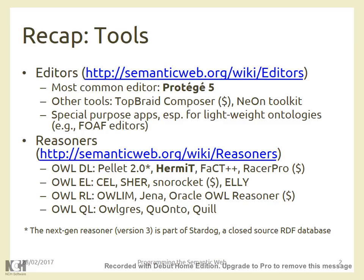Just to recap from the last lectures: in the semantic web we have some editors for many ontologies. The most common is Protégé, realized by Stanford University and written in Java, using a library called OWL API. There are other tools like TopBraid Composer, NeOn Toolkit, and other special-purpose applications like the Friend of a Friend editor, or more specialized tools available on the web.